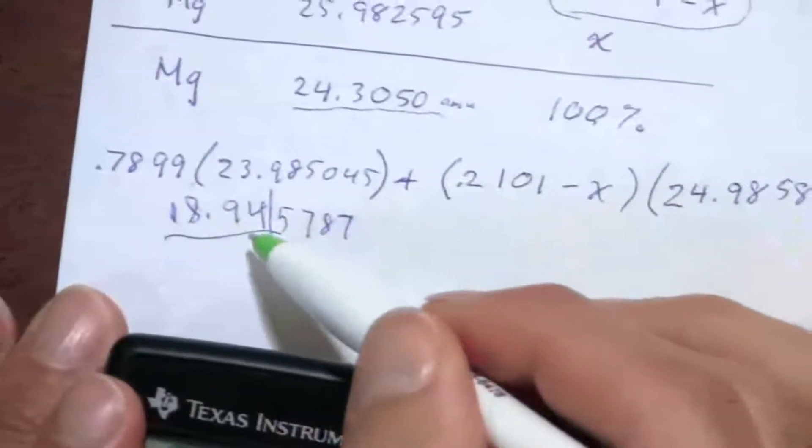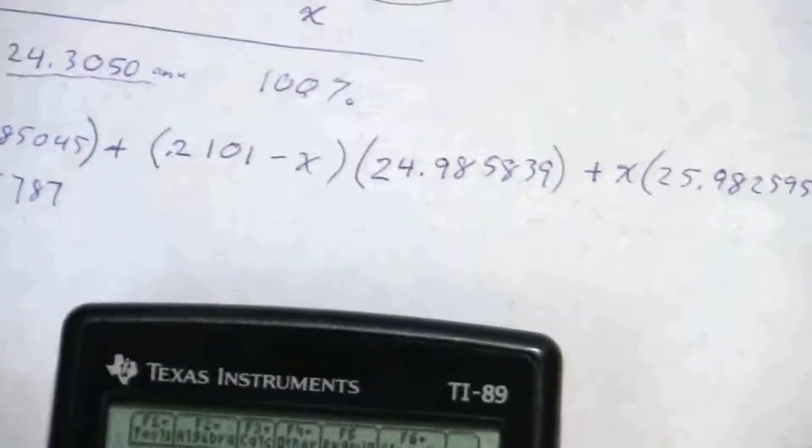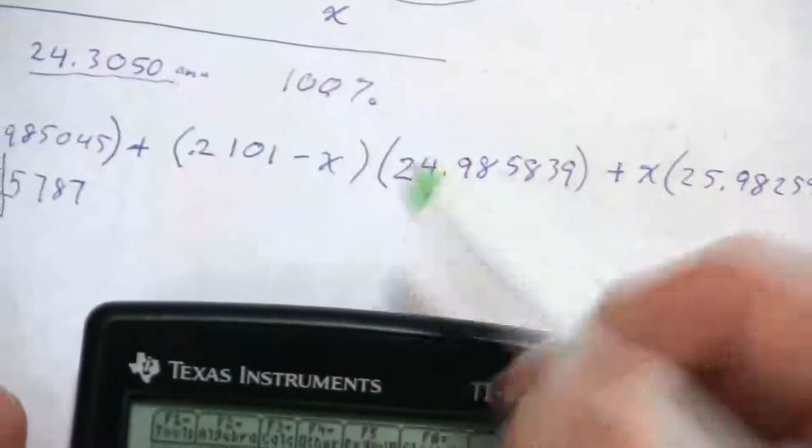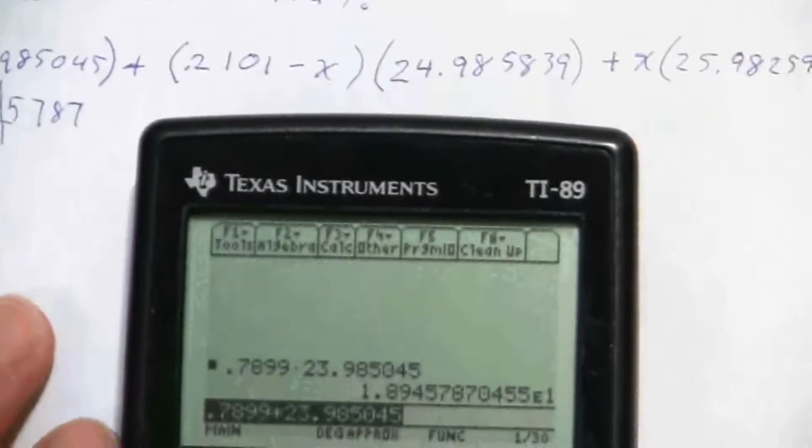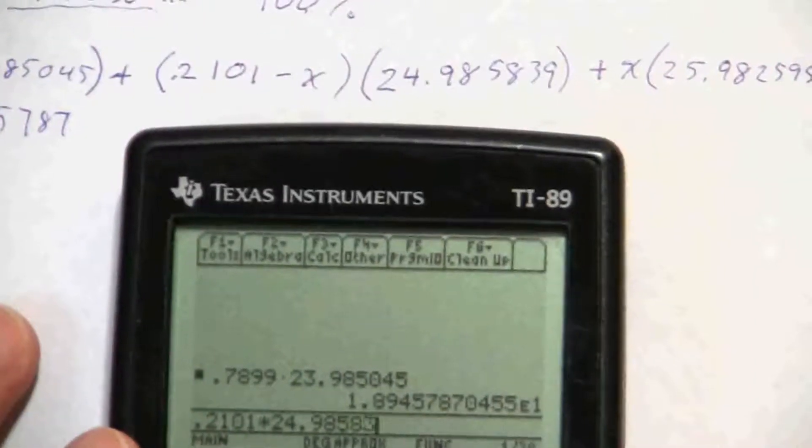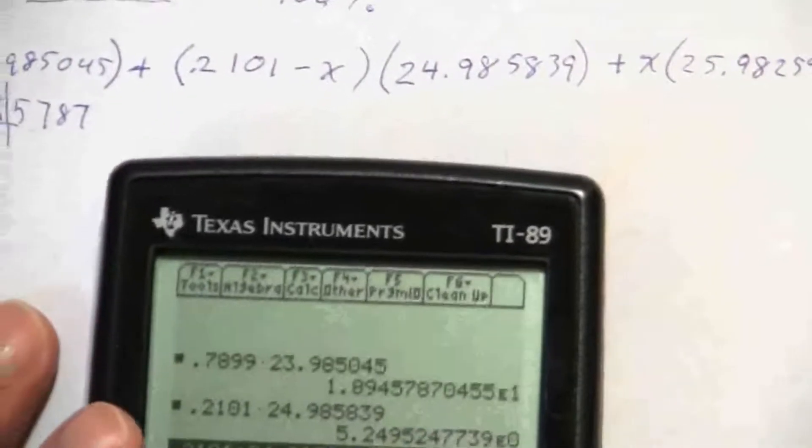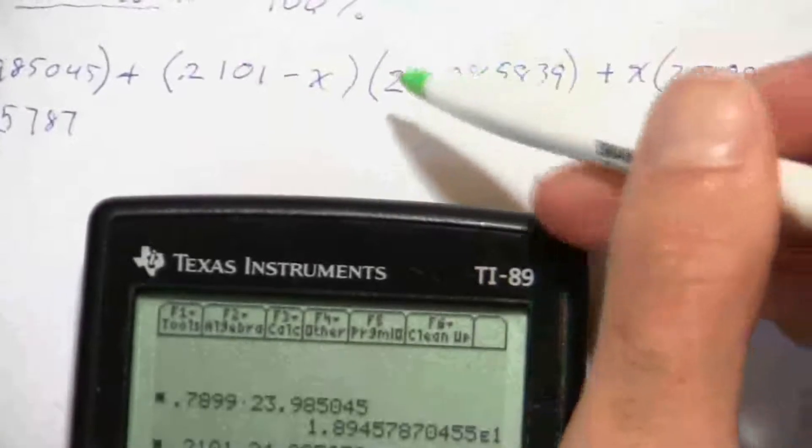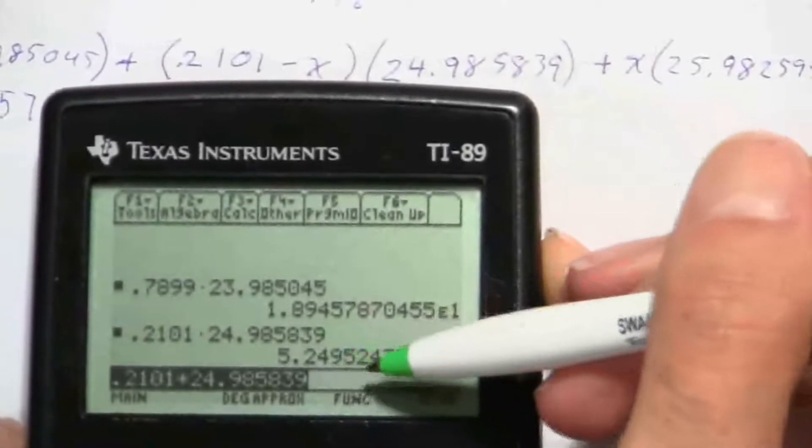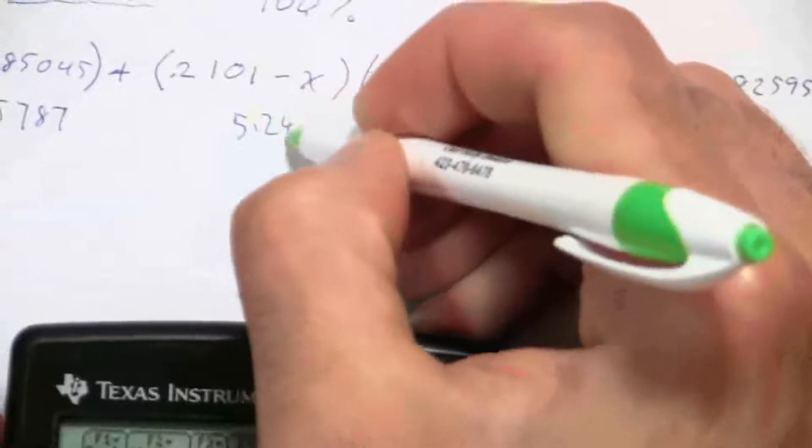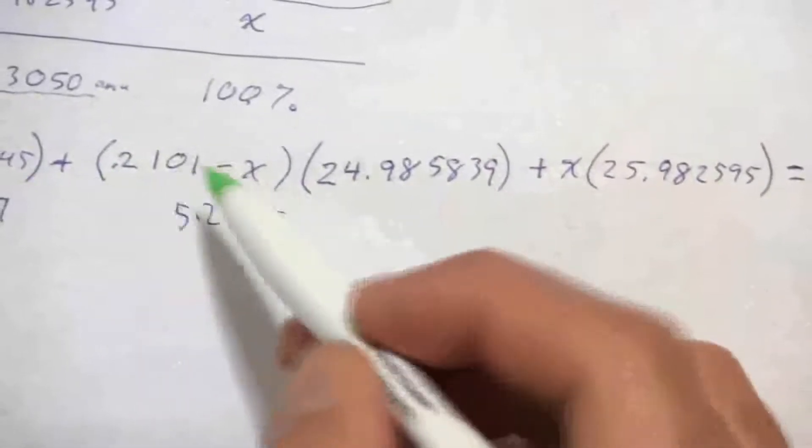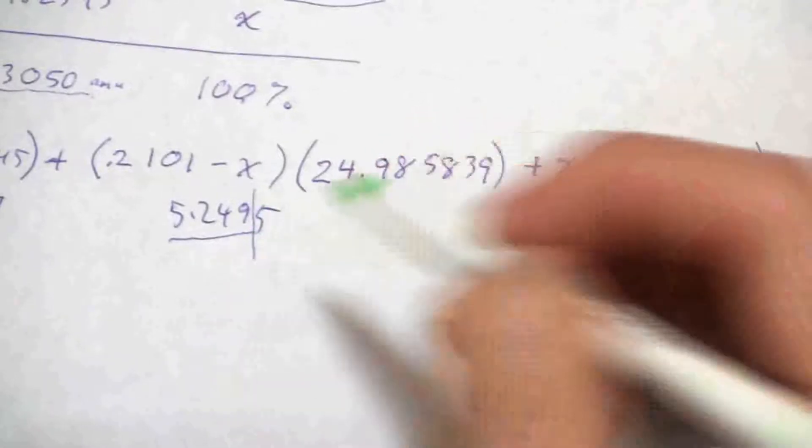All right, now here we have a subtraction, and so what's going to happen—this is the distributive property—I'm going to have 0.2101 times 24.985839, and that's the first product there, which gives me times 10 to the zero, so it's the same 5.2495. Again, four significant figures—I go with the one with the fewest, so there's my four, and I'll keep the five just to eliminate rounding errors.